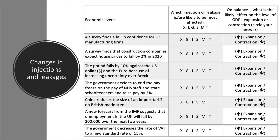It might be worth pausing the video here and having a go yourself. I'll also put a link to download a PDF file so you can print off the examples. Here are the first seven changes. Which injection or leakage is most likely to be affected? X for exports, I for investment, G for government spending, S for savings, M for imports, T for tax — and on balance, what's the likely effect on the level of GDP?